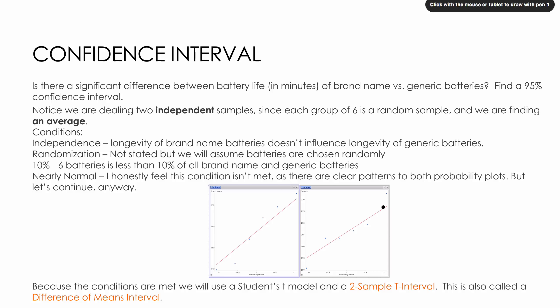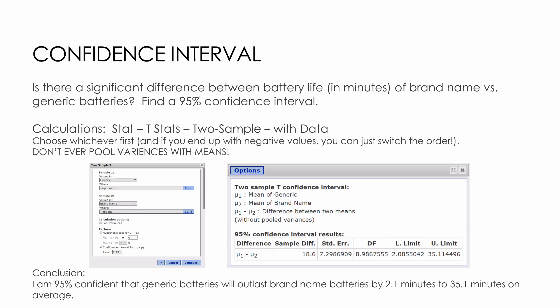I do want to point out something I said we would come back to, where I said the difference of means interval. In a little bit we're going to talk about paired data and how that's different. But it's important to understand that in this question, I'm going to be finding the mean of generic and the mean of brand name, and I'm going to be subtracting those values somehow. That's why we call it a difference of means, because we're finding the means and then taking the difference of them.